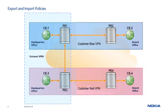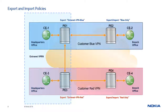On the headquarters sites, an export policy is used to mark routes as both VPN and Extranet routes. The export policy on PE1 marks routes as Blue and Extranet, and the export policy on PE3 marks routes as Red and Extranet. On the branch sites, the export policy marks routes only as VPN routes. Import policies are used to control routes accepted into a VRF. The import policy on PE1 accepts Blue routes and Extranet routes, and the import policy on PE3 accepts Red routes and Extranet routes. On the branch sites, the import policy accepts only the VPN routes.